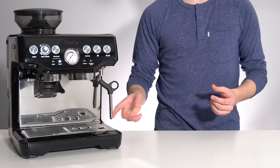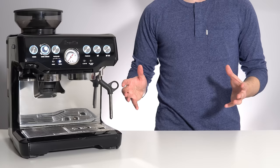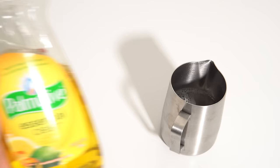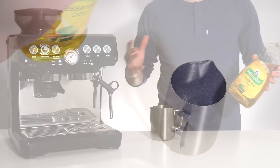Instead of using milk to practice, take your steaming pitcher, fill it up to the normal level just under the spout, this time with water, and add a single drop of dish soap. Believe it or not, using this mixture will allow you to practice texturing milk without wasting any milk or gumming up your steam wand.